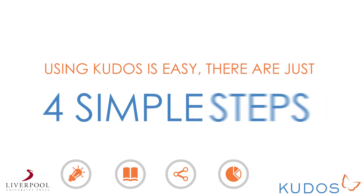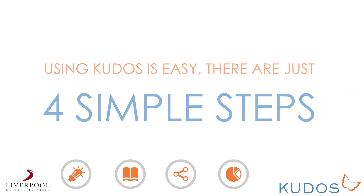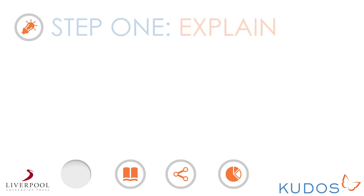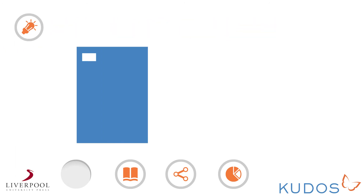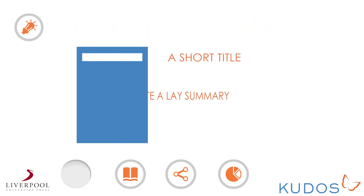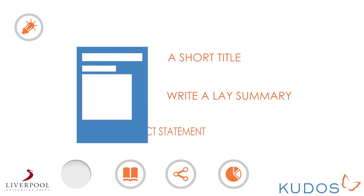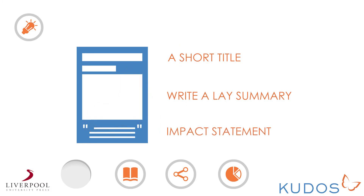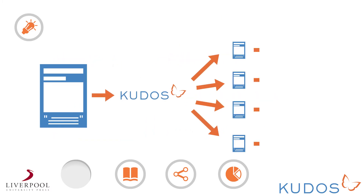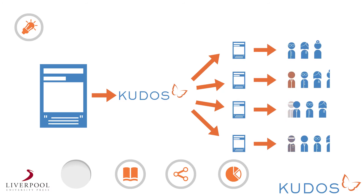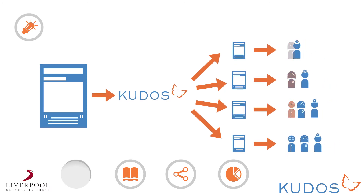Using Kudos is easy — there are just four simple steps. Step 1: Explain. Give your publication a short title, write a lay summary, and an impact statement. Kudos then distributes this all over the web, linking back to your publication to help more people find and understand your work.